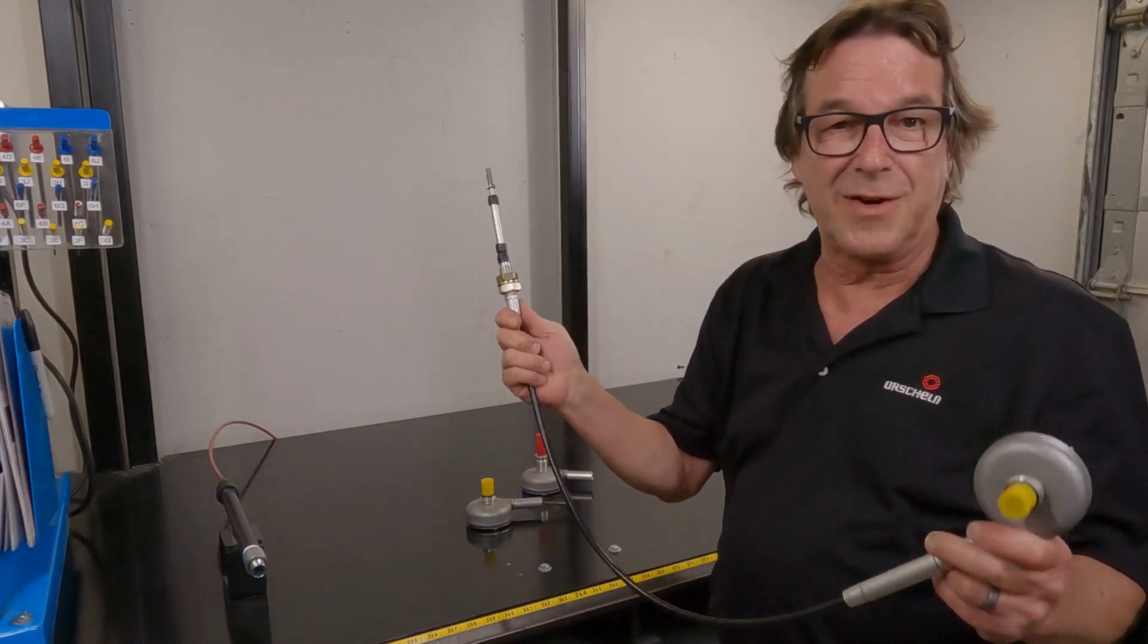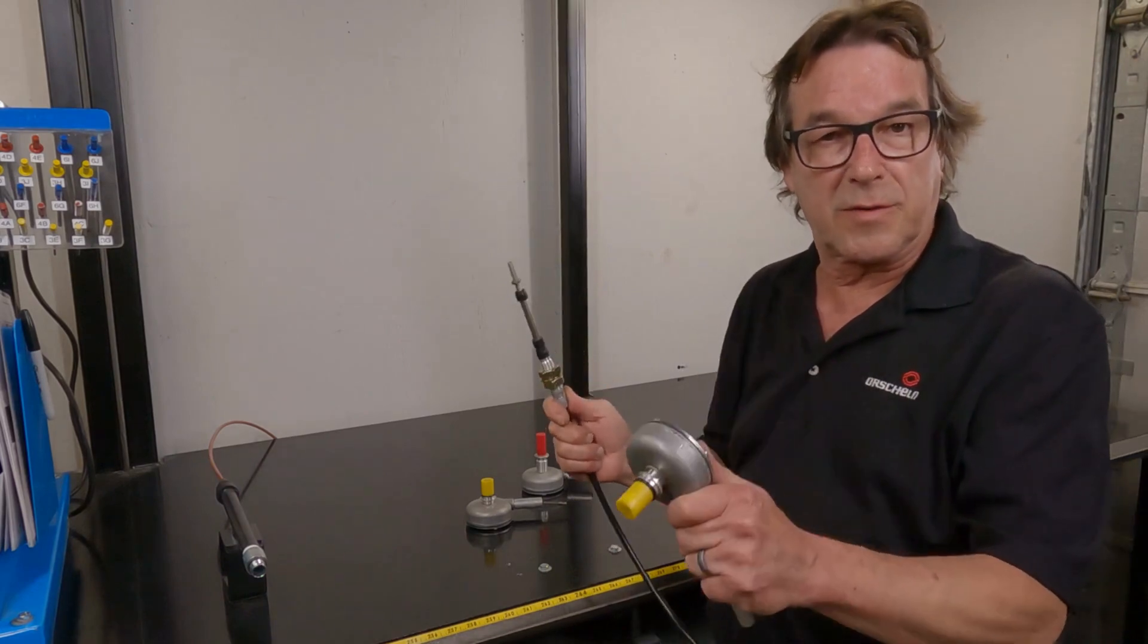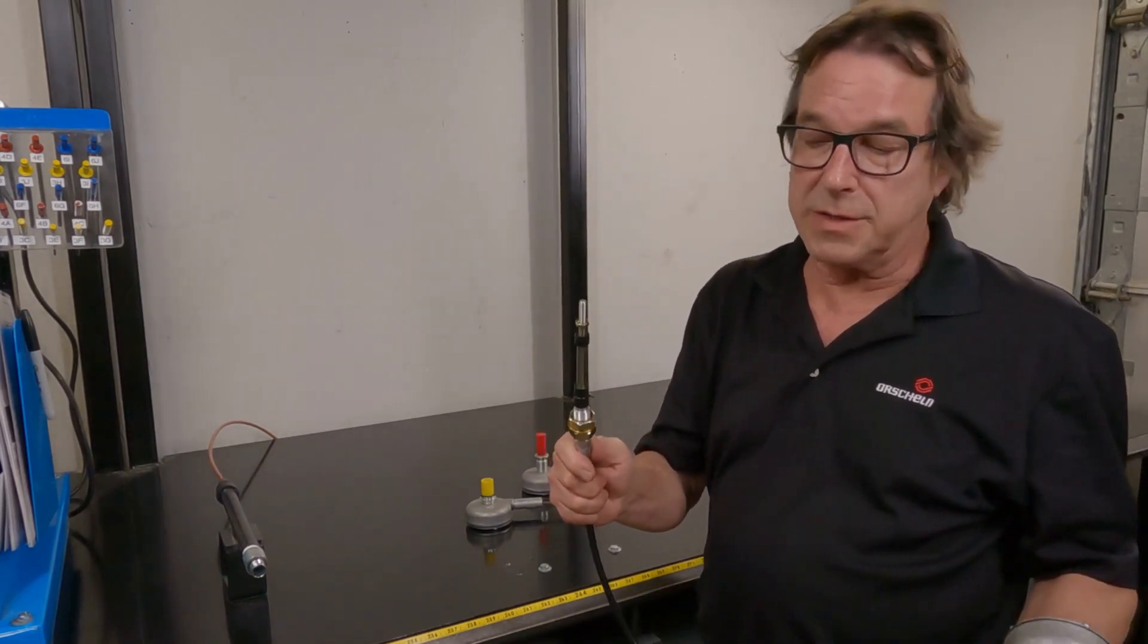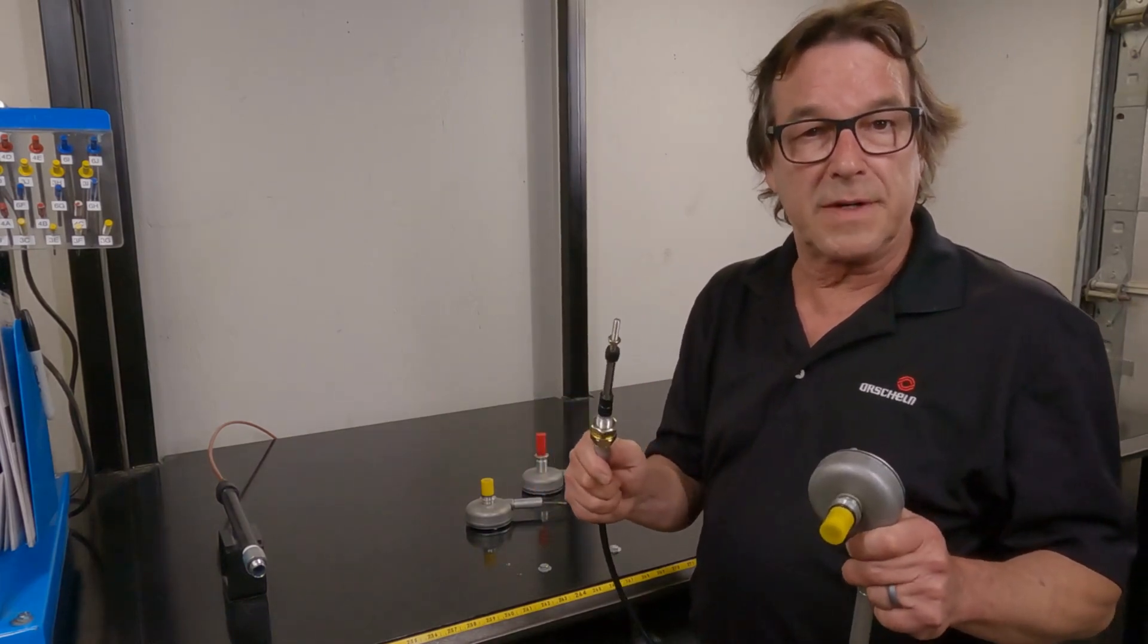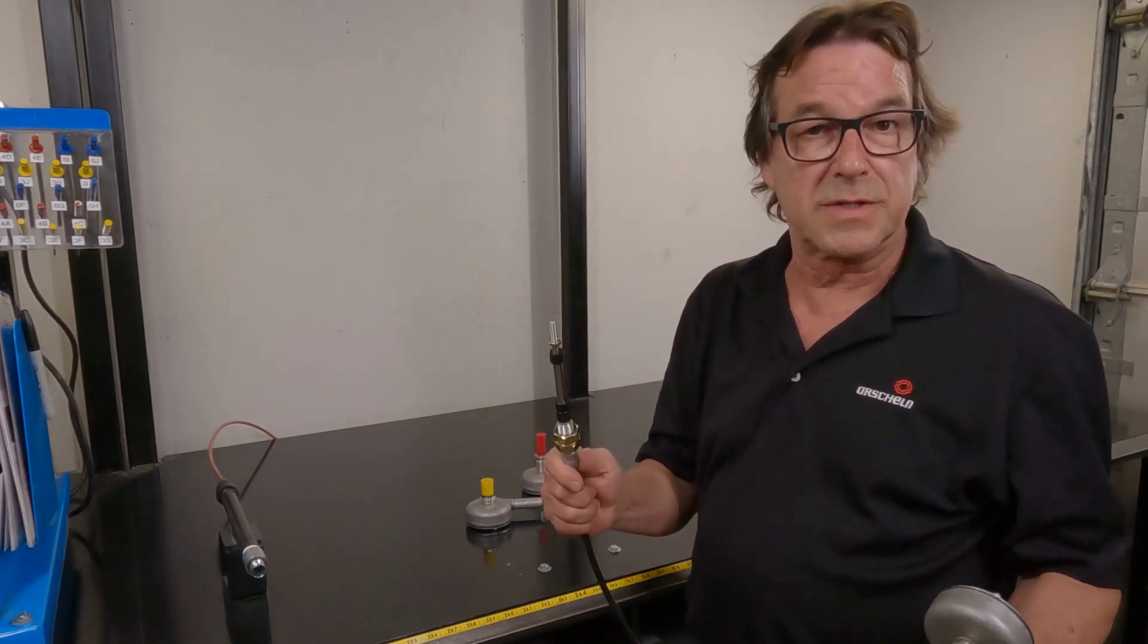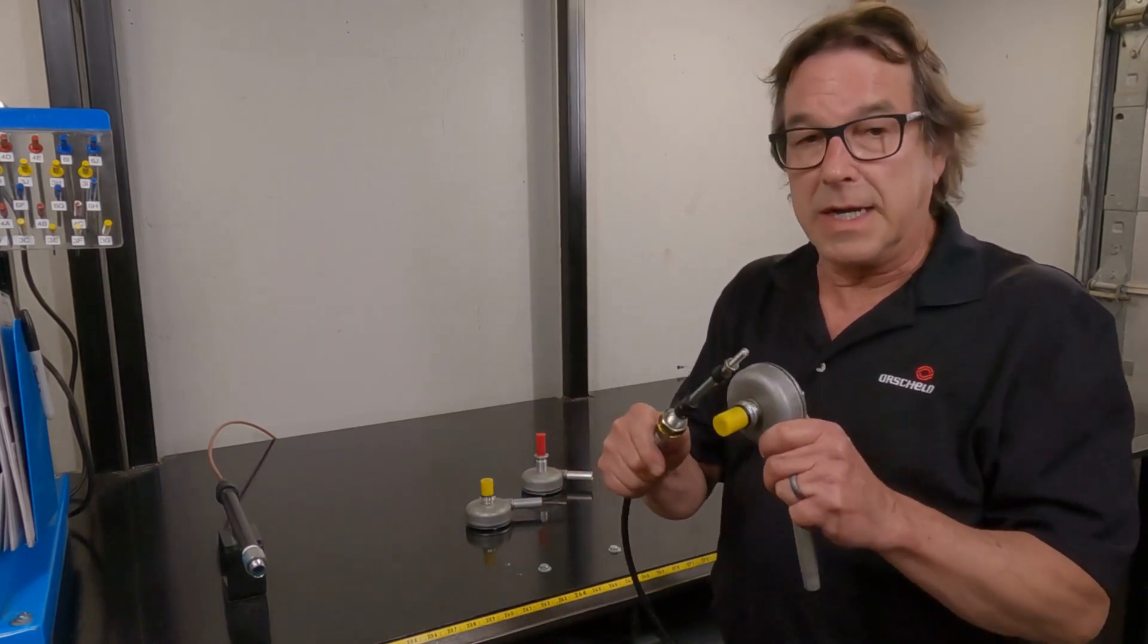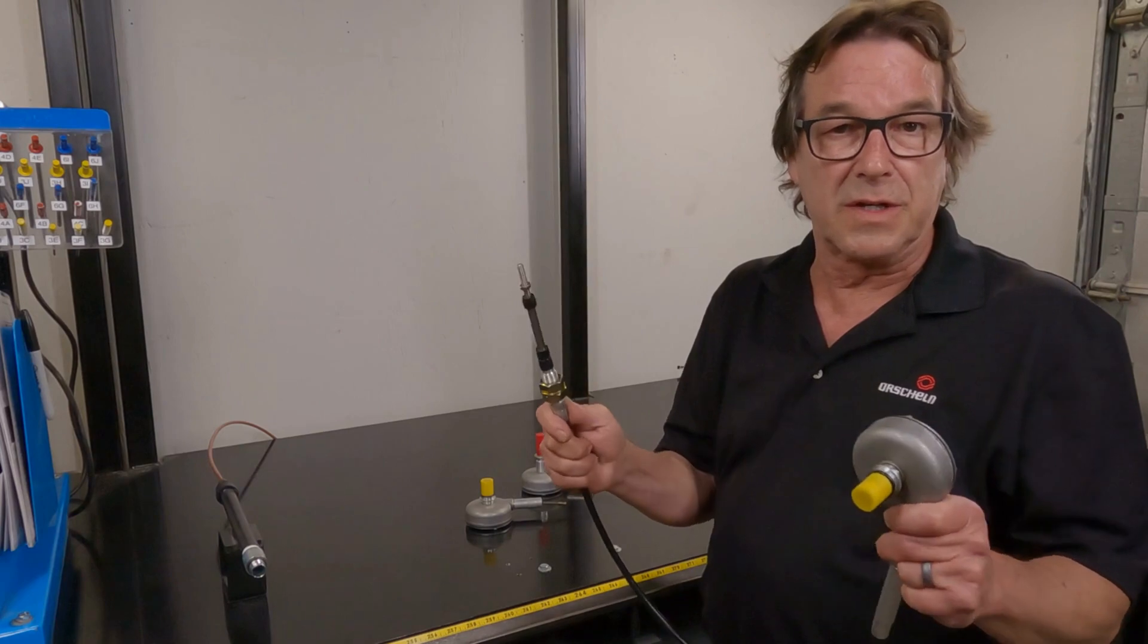The modulator interfaces between the transmission and the throttle or throttle body on the engine. It tells the transmission when to shift in relationship to throttle position, RPM, ground speed, and tells it when to shift in those conditions.